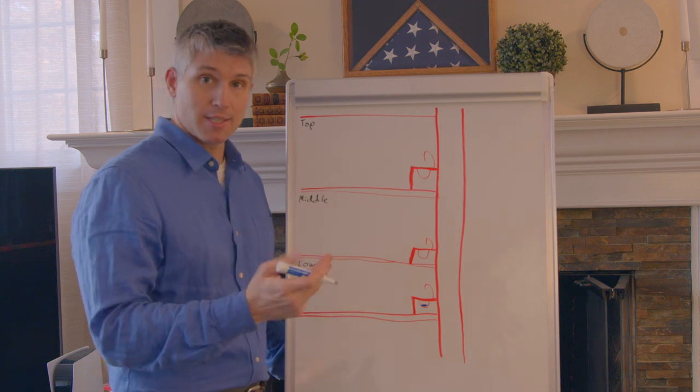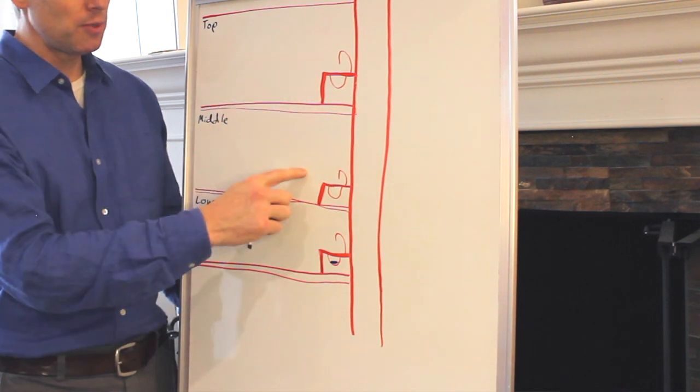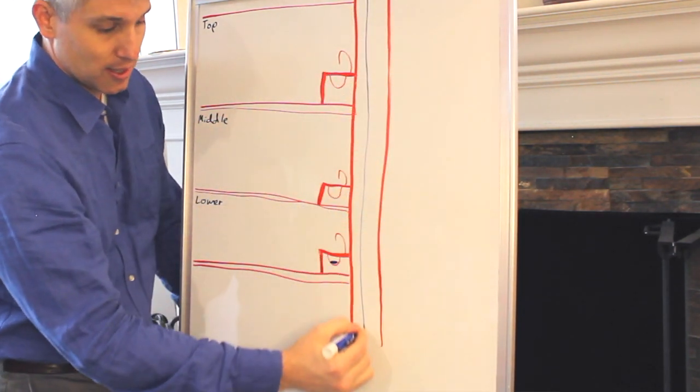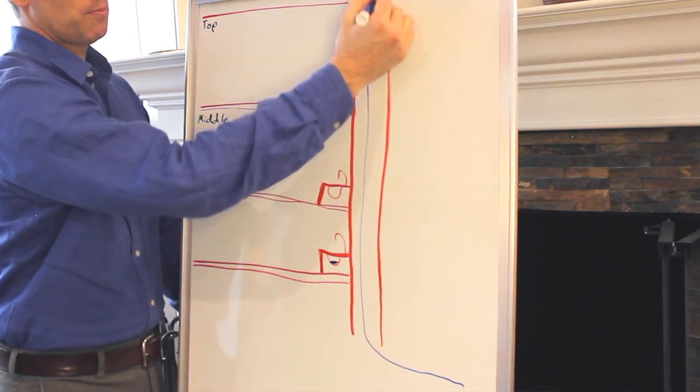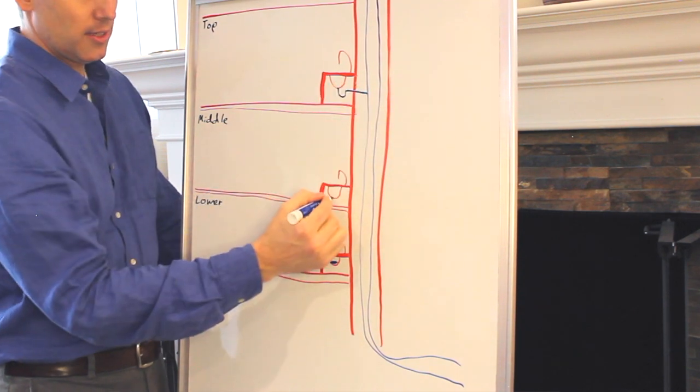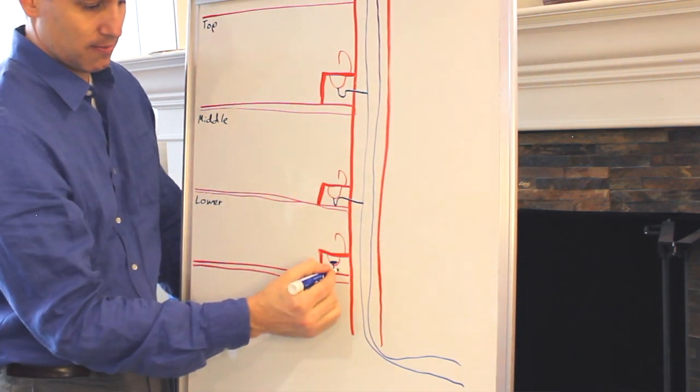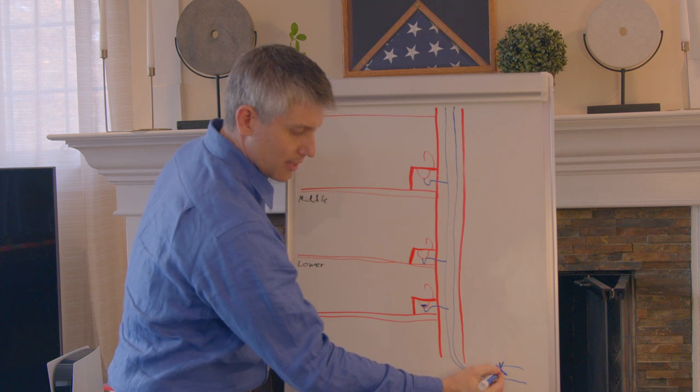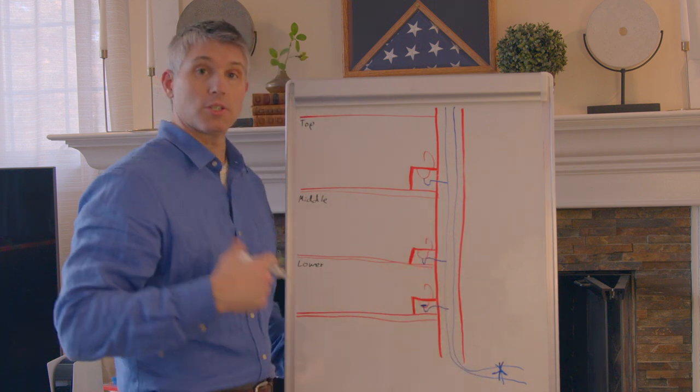So basically what I explained to him was that the water must be coming from one of the floors above and joining the stack line to which all of these faucets connect, and the water was coming down and hitting a clog here and backing up to the lowest drain, which is mine.